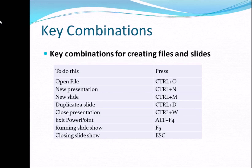Key combinations for creating files and slides. The first one is open the file — that is Control plus O. O means open the file. Once you press this combination, Control and O, you will get a window in front of you where you can browse for the file, select it, and press Enter to get that file open.